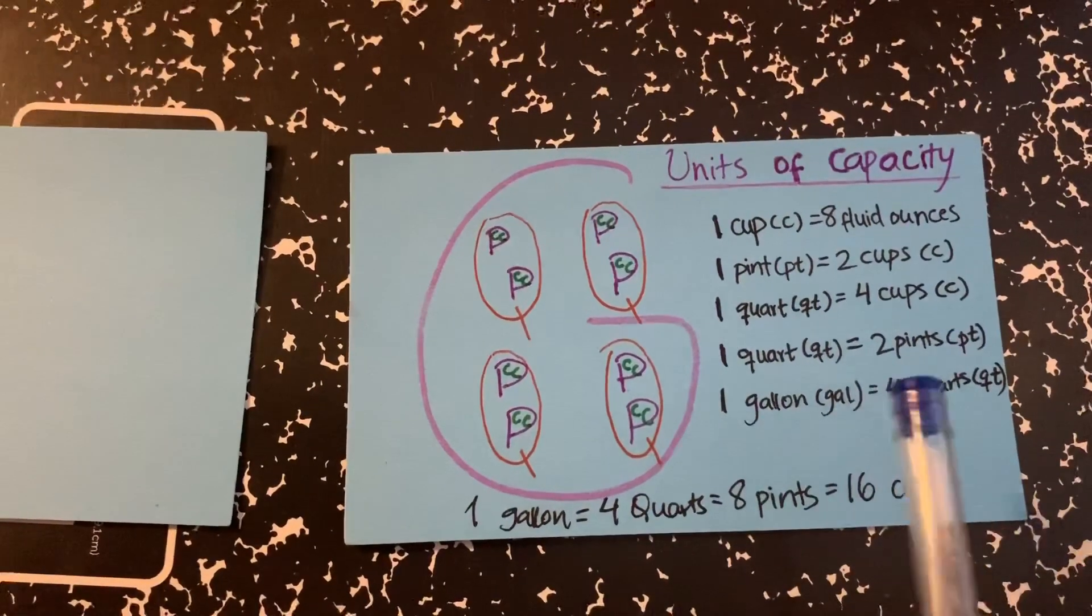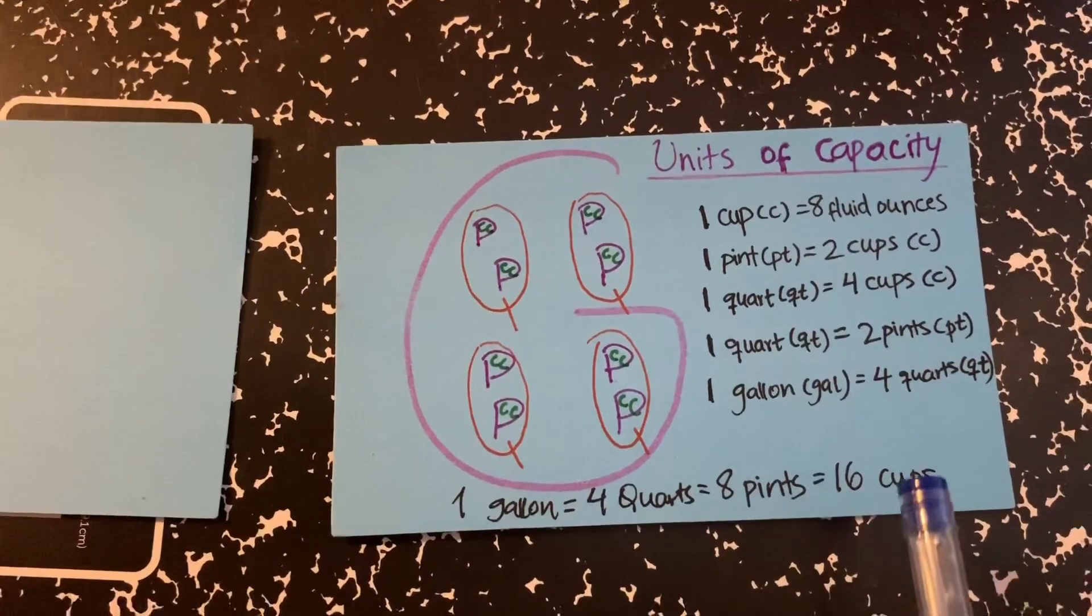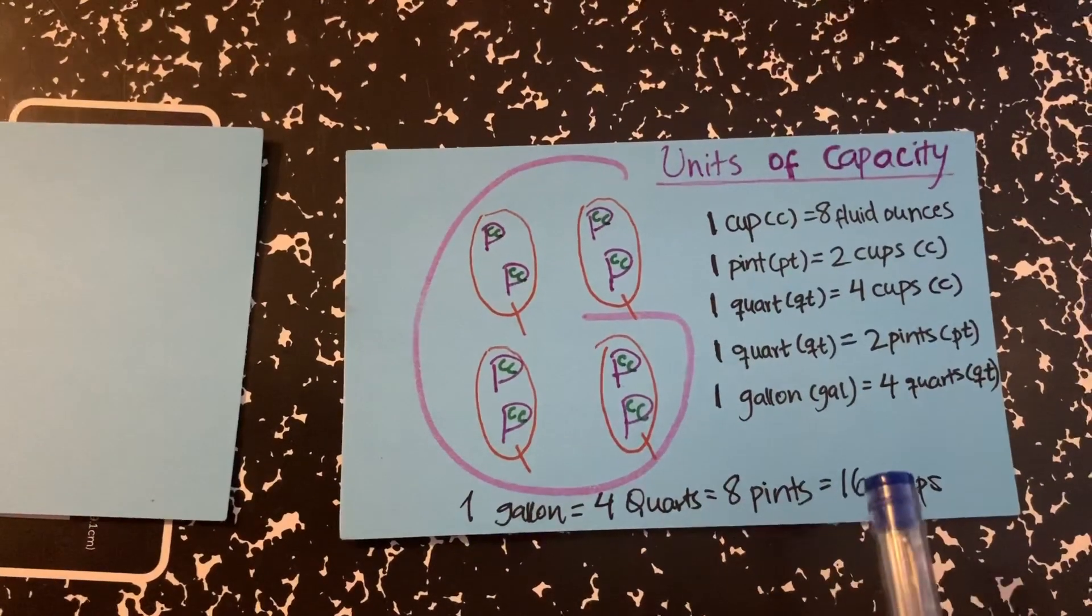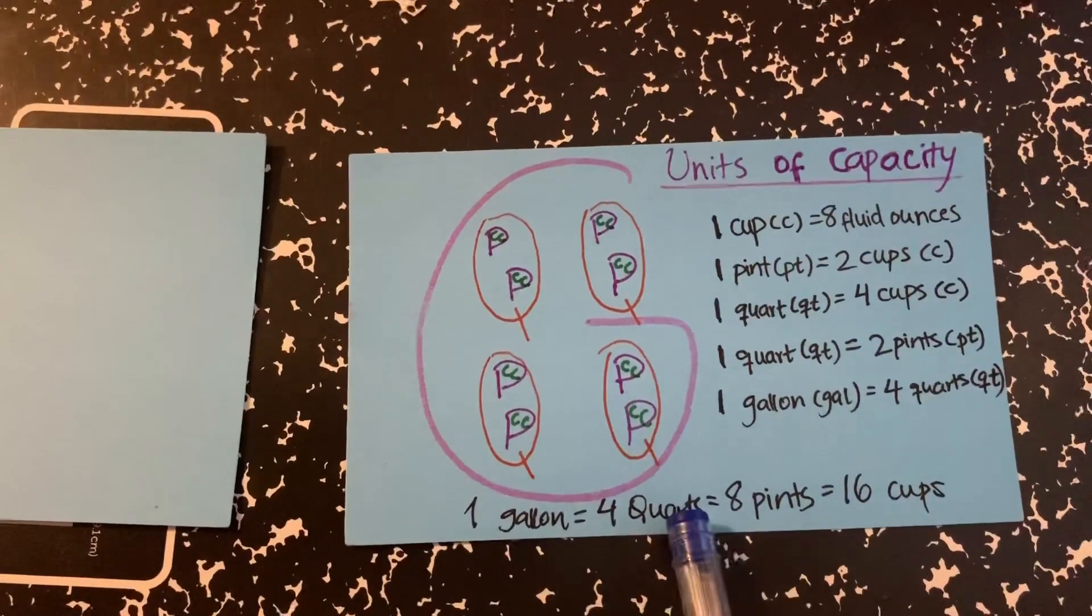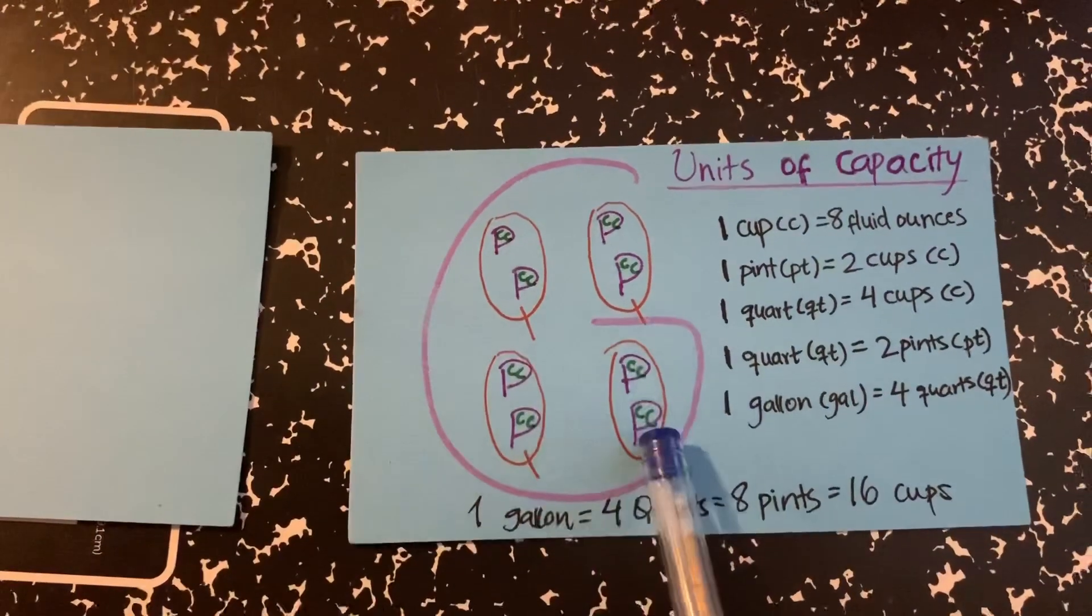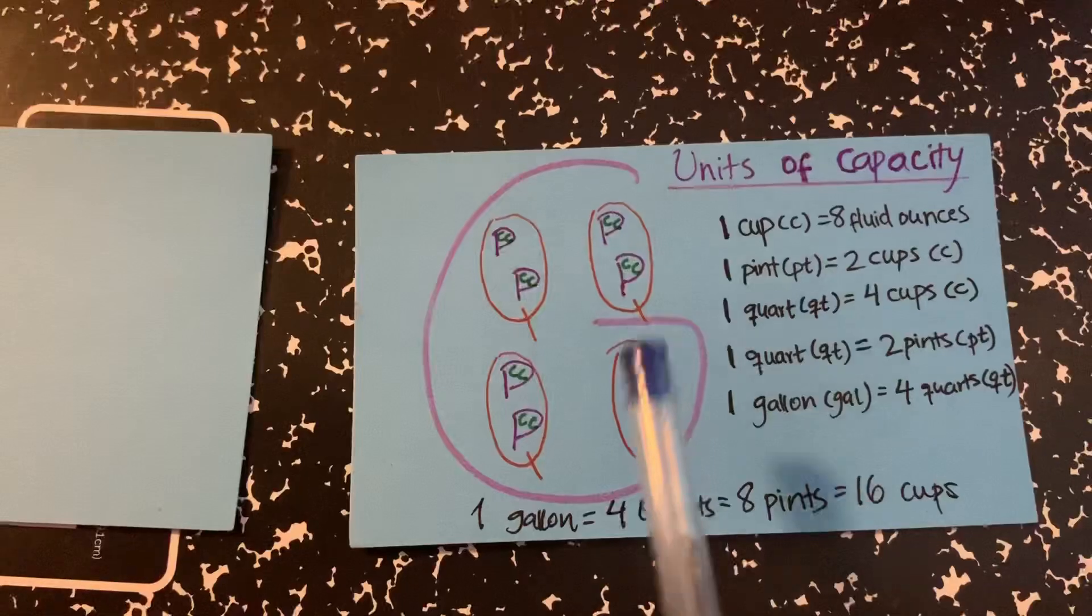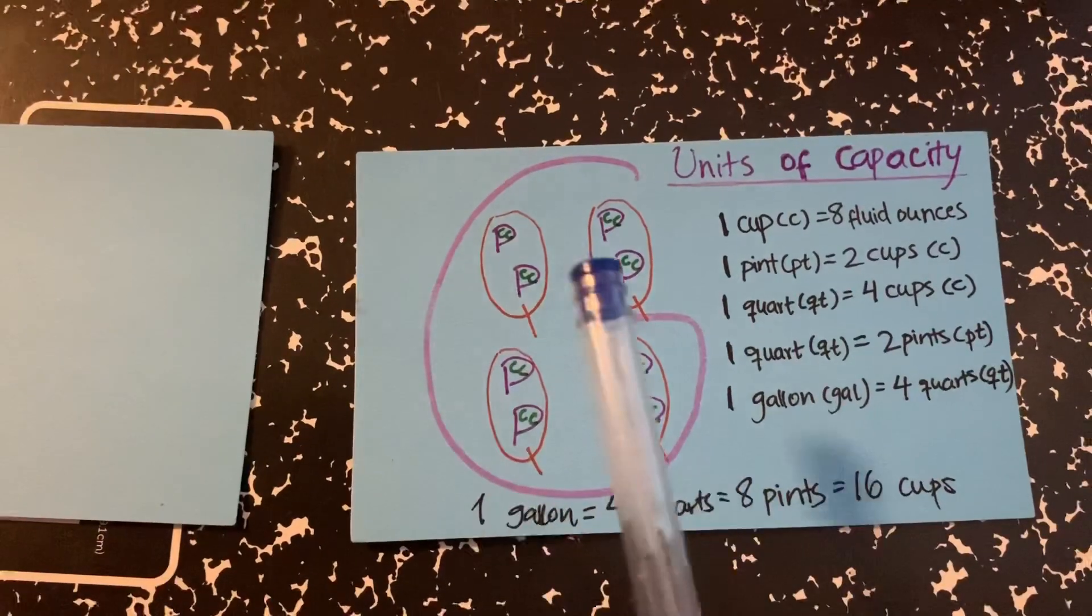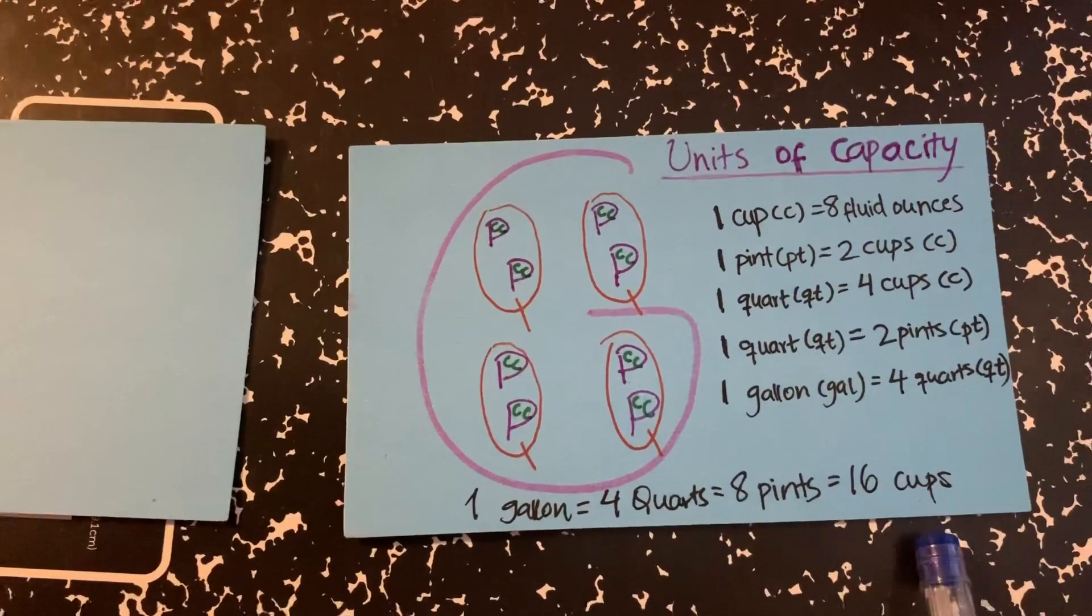So that's it. Now if you want to know like in a general equation, not equation, like in a general conversion, what you would write is that 1 gallon is equal to 4 quarts, 4 Qs, and then 8 Bs because there are 8 Bs in total, and there are 16 Cs in total. So you write 1 gallon is equal to 4 quarts, 8 Bs, 16 Cs.